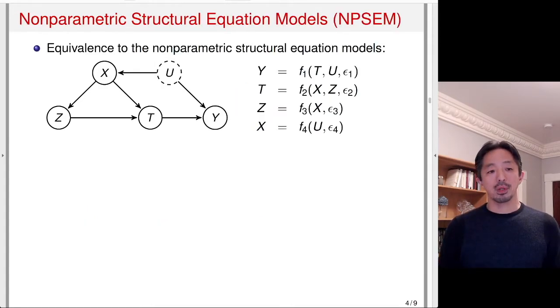Now, why is this DAG useful? It turns out the DAG represents or is equivalent to the nonparametric structural equation models of the following. Here we have an example of a DAG. The DAG on the left is basically a graphical representation of the nonparametric structural equation model, NPSEM, on the right. Here, Y is some function fY of two variables, T and U, as well as the independent error term epsilon 1. If you look at the graph on the left, you see that Y has two incoming arrows coming from T and U. So that's why Y is a function of T and U, and then there's some error term.